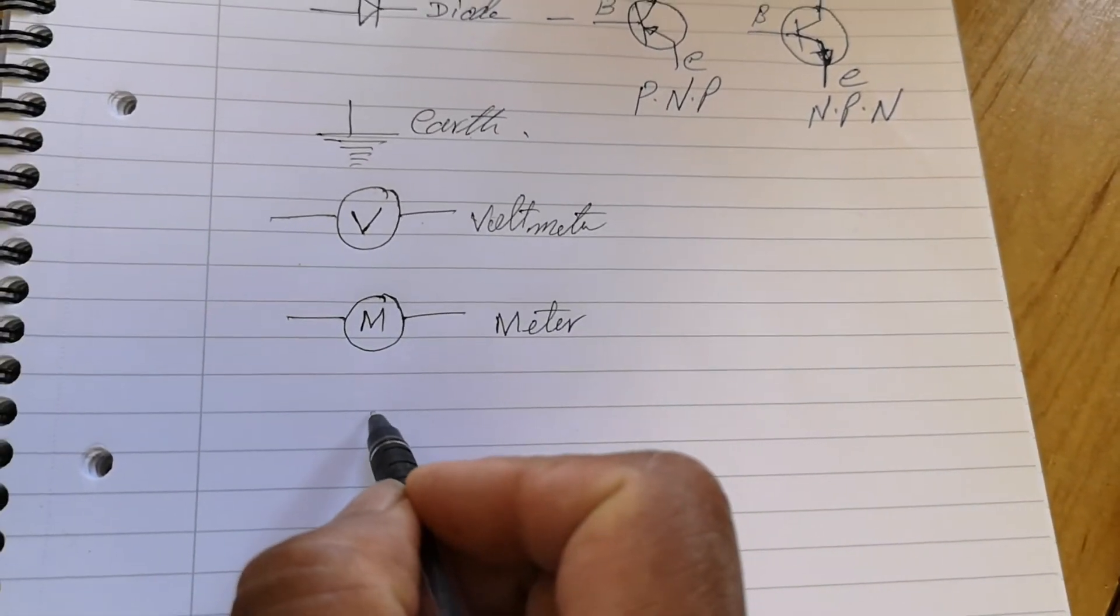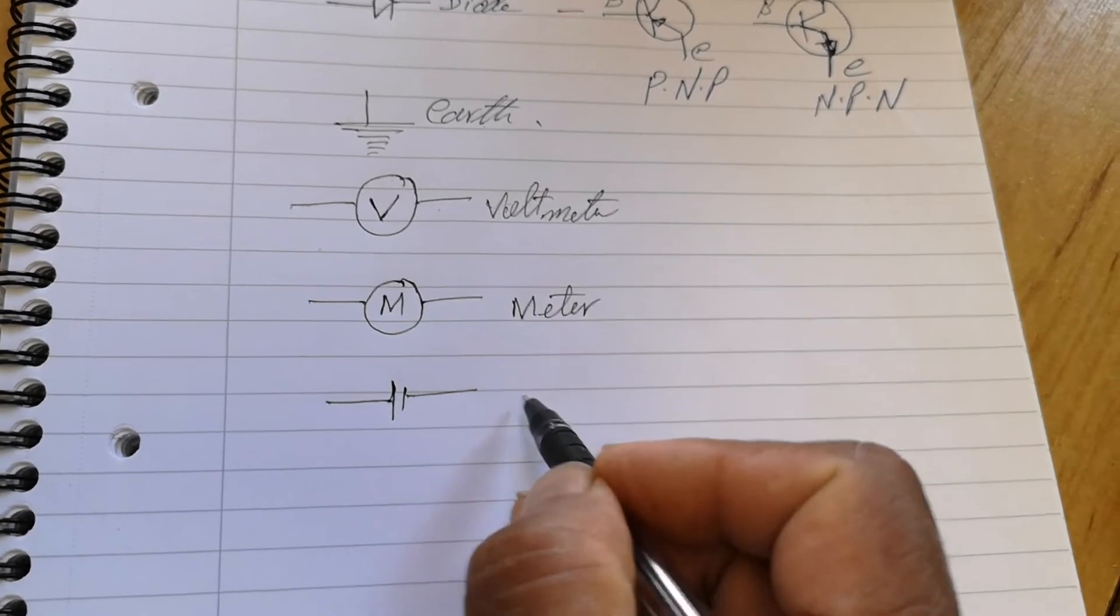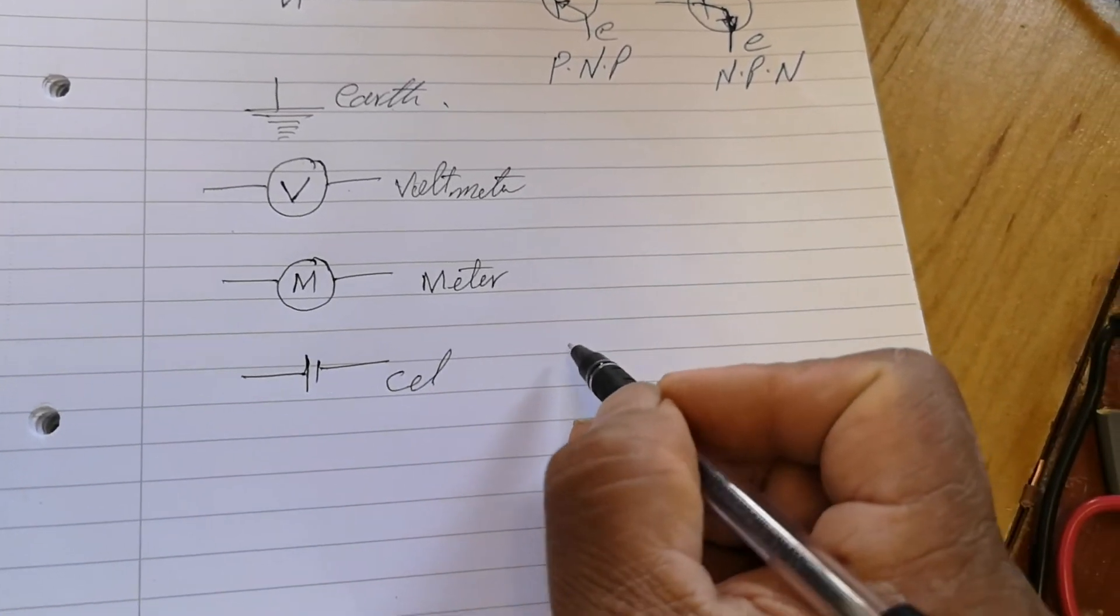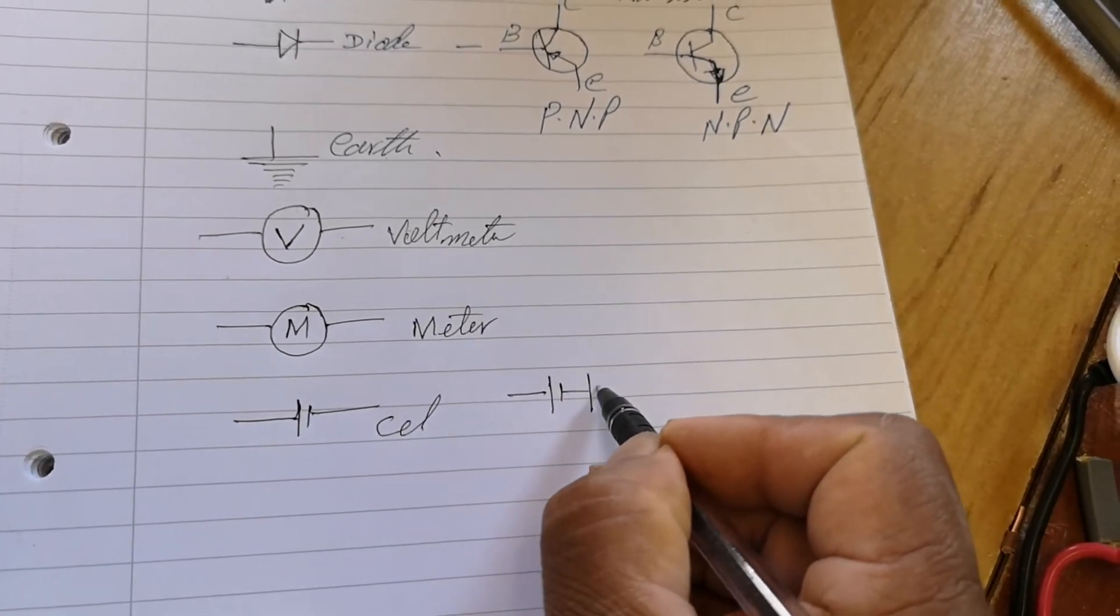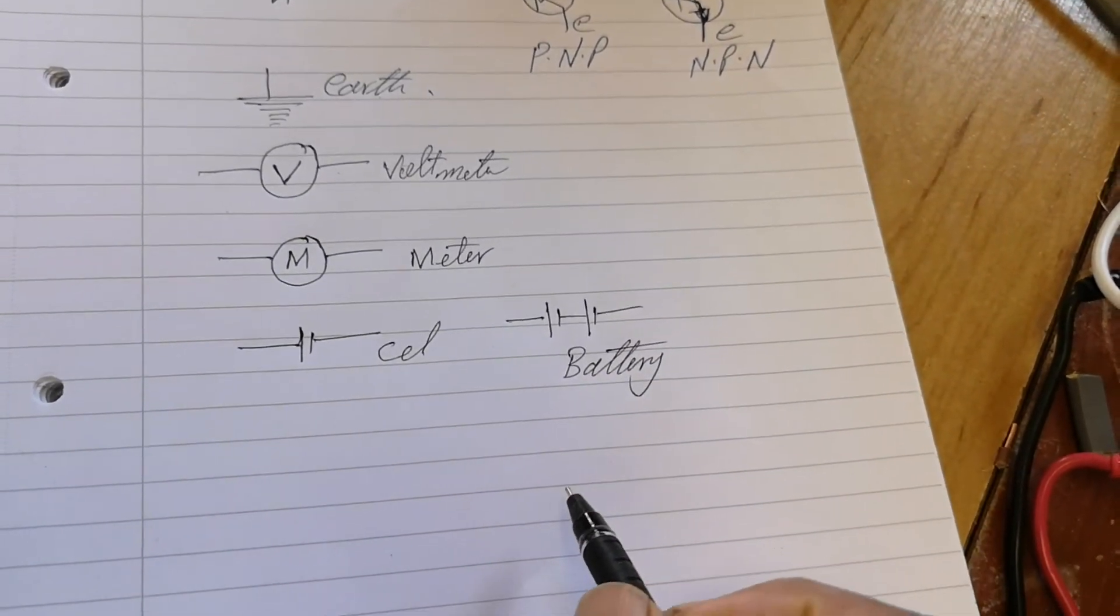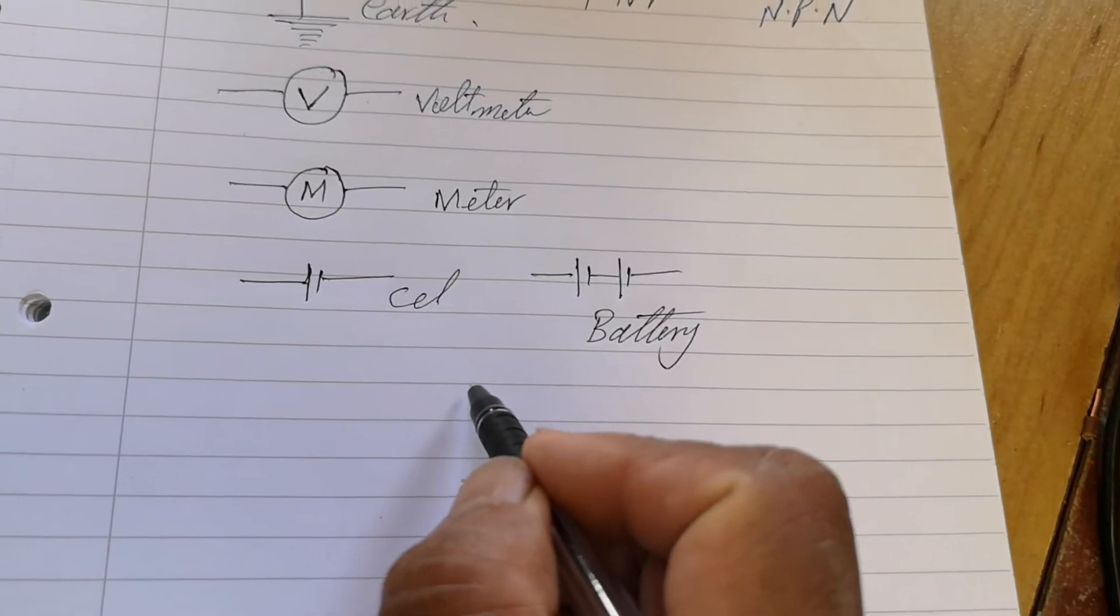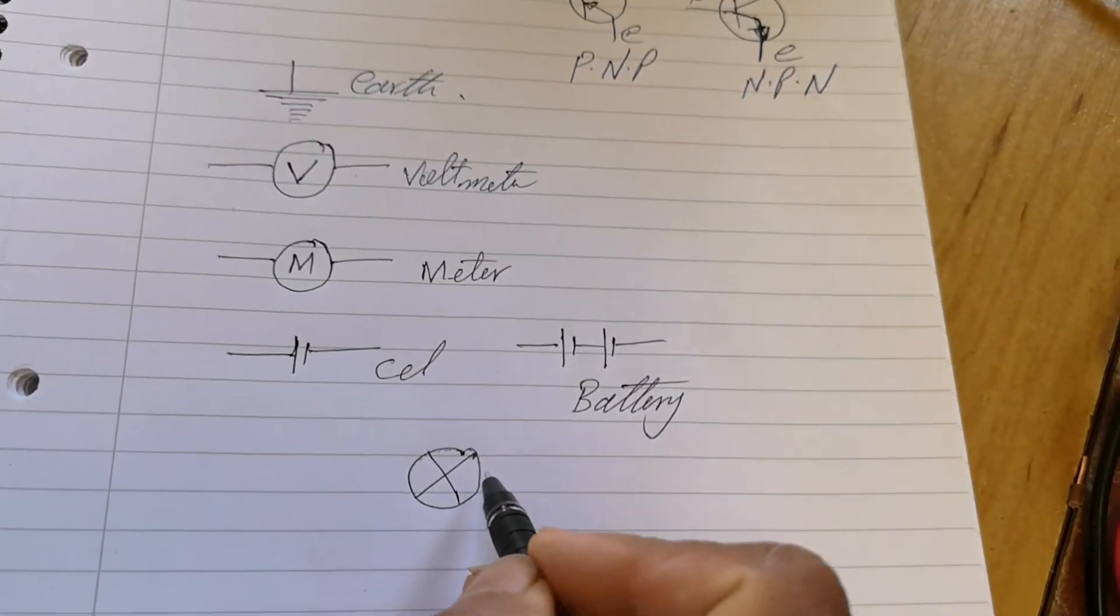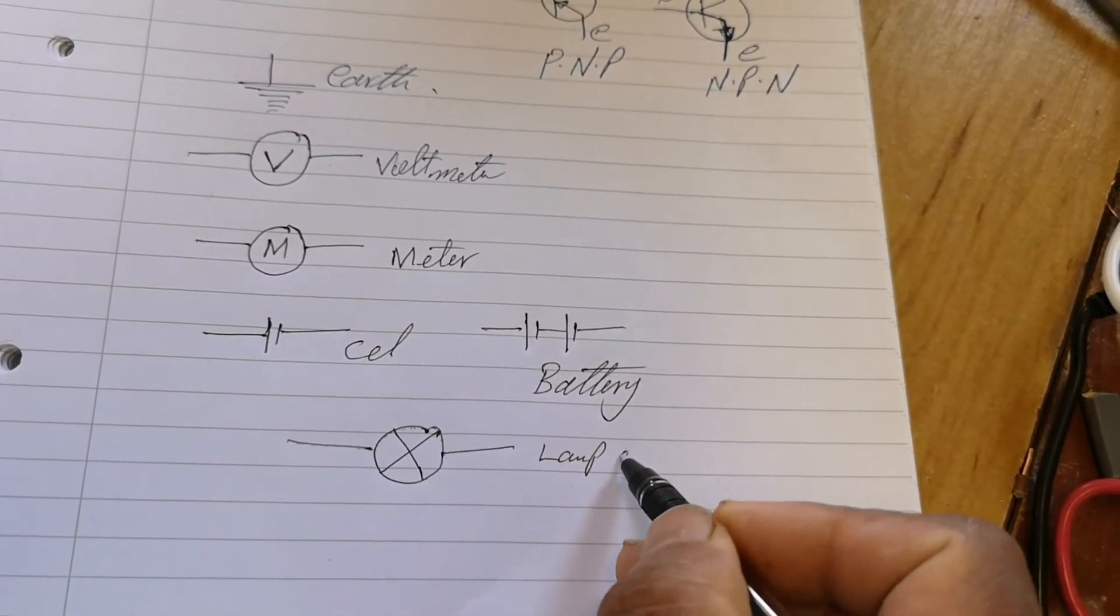And it's a battery. That's a cell. And if you put two cells, that's another positive, it becomes a battery symbol. Battery. And this becomes a lamp symbol. Lamp, or bulb.